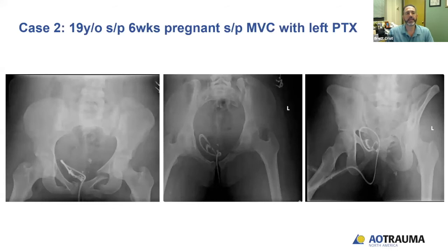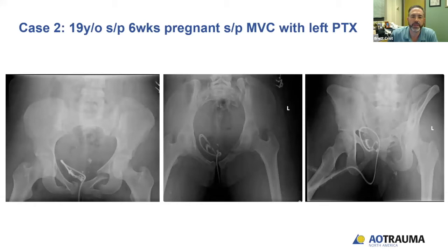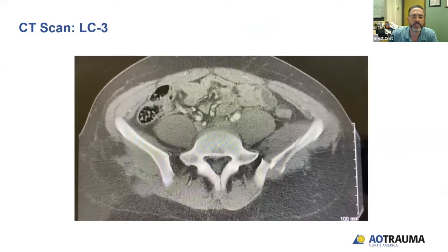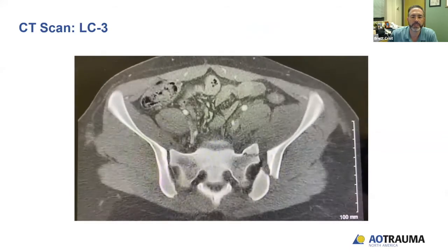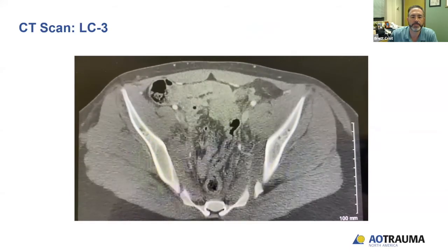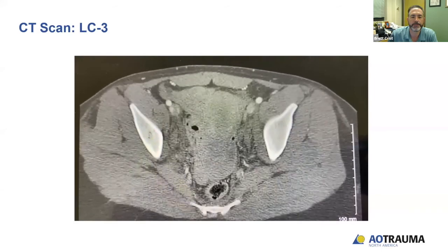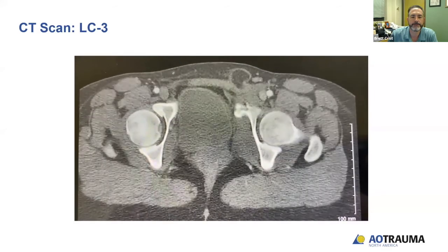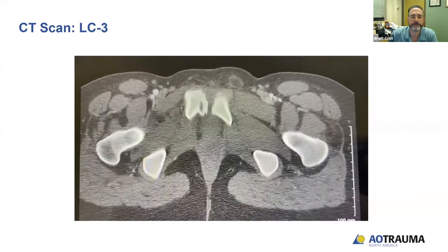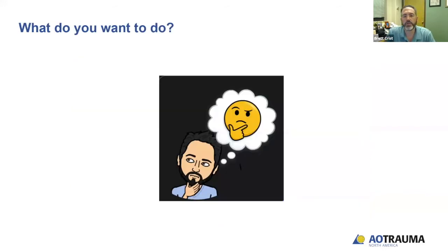And here's the second case. So this is a 19-year-old who's six weeks pregnant, status post-motor vehicle crash, and had a left-sided pneumothorax with some rib fractures. So slightly different injury pattern, as you can see here on her plain radiographs. This is her CT scan, axial cuts. Think about what you'd want to do with both of those cases as we go through this.